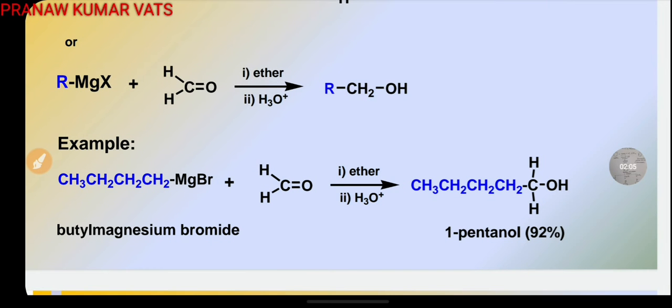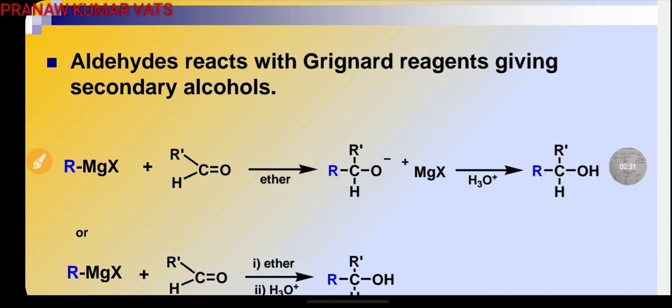Example: CH3CH2CH2CH2MgBr, in place of R there is an alkyl group and the alkyl group is butyl. When treated with formaldehyde in presence of ether and H3O+, it is giving 1-pentanol and the yield of this reaction is 92%. By this method, secondary alcohols can also be prepared.